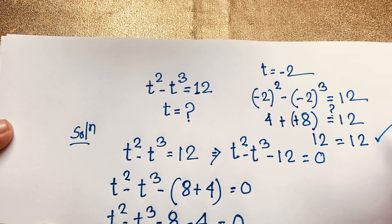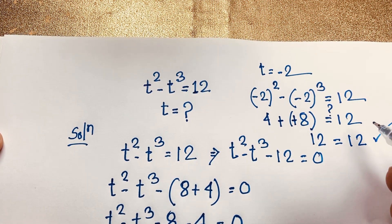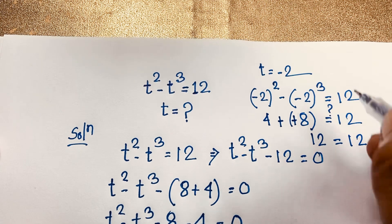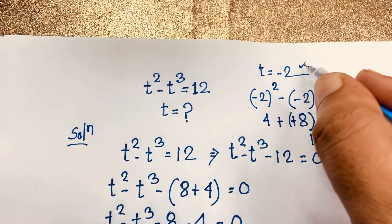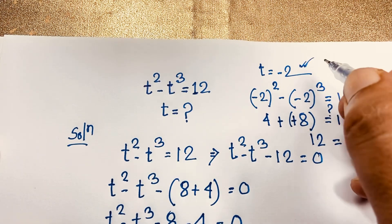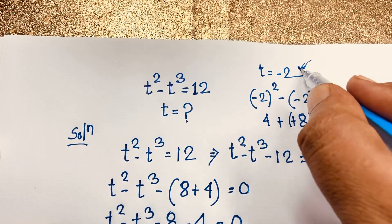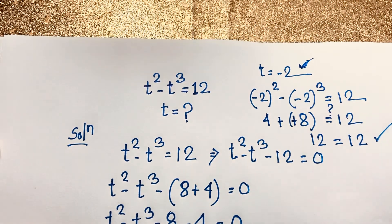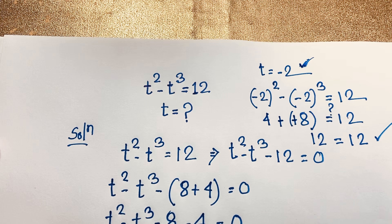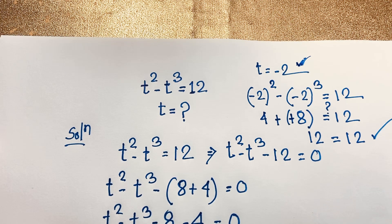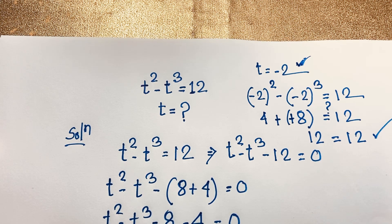Left-hand side and right-hand side are both equal, so t is equal to negative 2 is our proper answer. This is our real solution in this math Olympiad question. Thank you all. If you enjoyed this math problem, please subscribe to my channel for other interesting videos. Goodbye, take care everyone.